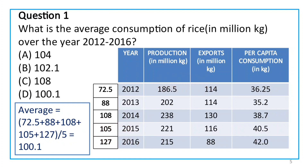Production minus exports gives the same equation for consumption. Now, how do you find the average of these 5 values? Add them and divide by 5. That is the answer — this is option D. It is a straightforward question.